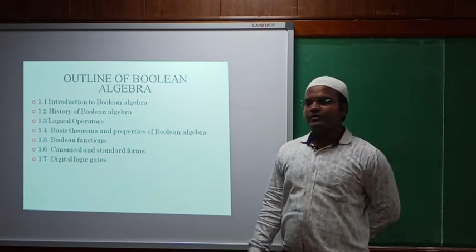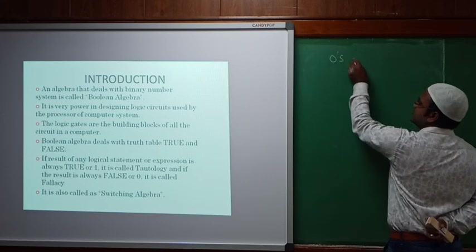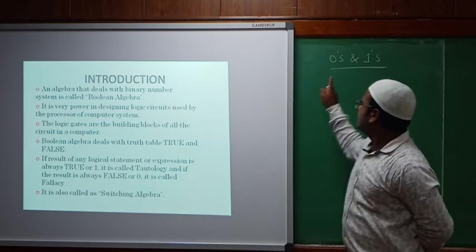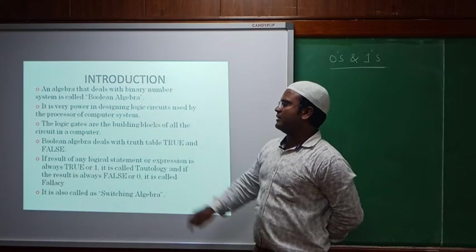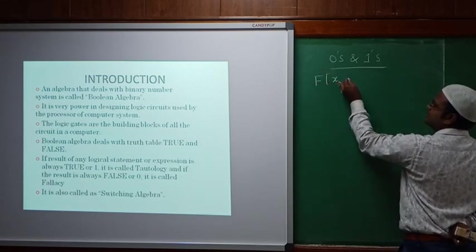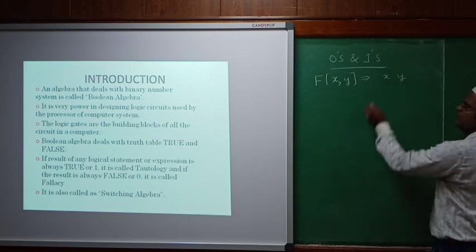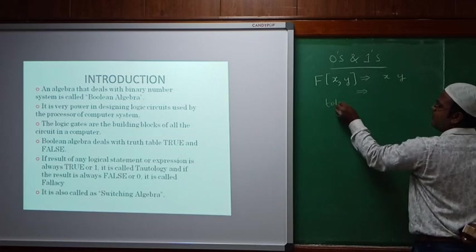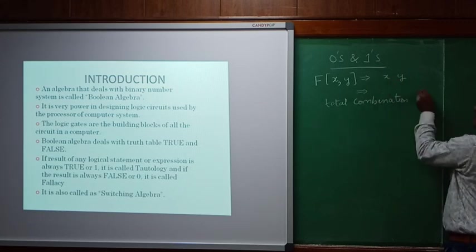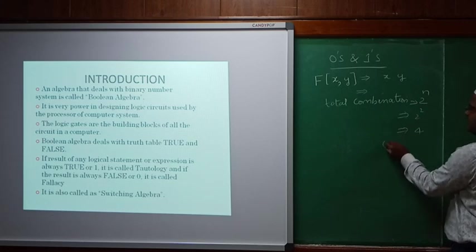First, what is the introduction to Boolean algebra? Digital class is all about zeros and ones. We are going to see binary numbers — binary numbers are zeros and ones which we use to get the Boolean function. That is a function which contains variables. If I have f with variables x and y, it can take two-bit combinations. The total combination would be 2 power n — with two digits, that is 2 power 2, which means it can have 4 combinations, ranging from 0 to 3.